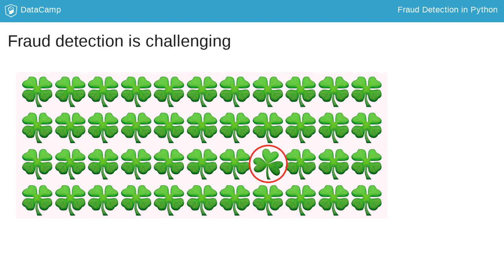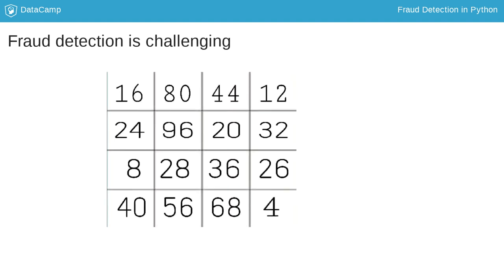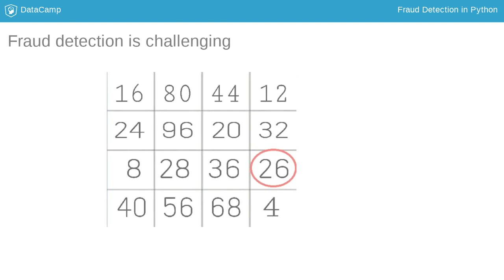That one was easy, but it does get much harder when we're working with numbers. This is much more like real life — we'll need to find a fraud case based on numbers. The case we're looking for is well-concealed and only one of these is odd. Can you find it? Here it is: 26. It's the only number in this set that's not divisible by 4. This illustrates a typical fraud detection problem really well — based on data, you'll need to train an algorithm to find the odd one out among many normal observations.